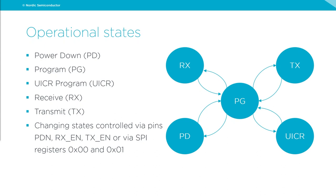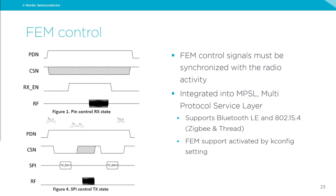Today we do pin control using a PDN pin, an RXN pin, and a TXN pin. SPI control is also possible, but current software support uses PDN, RXN, and TXN pins. There are additional pins: a mode pin for setting output power between 10 dBm and 20 dBm, and an ANT select pin for choosing which antenna is used during RX and TX sessions. Running the device requires continuously toggling pins to make this work.